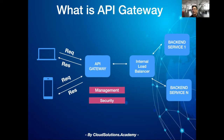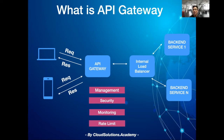And there are various cross-cutting concerns that need to be addressed, like monitoring the API for latency, error rates, central logging, or setting up rate limits for APIs — like you can only allow 1,000 requests per second.